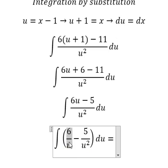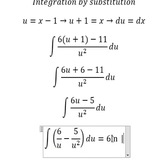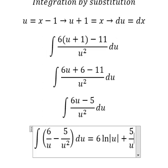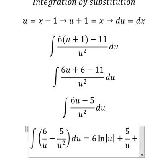The integration of this one we have 6 ln of the absolute value of u. The integration of this one we have 5 over u and I will put C.